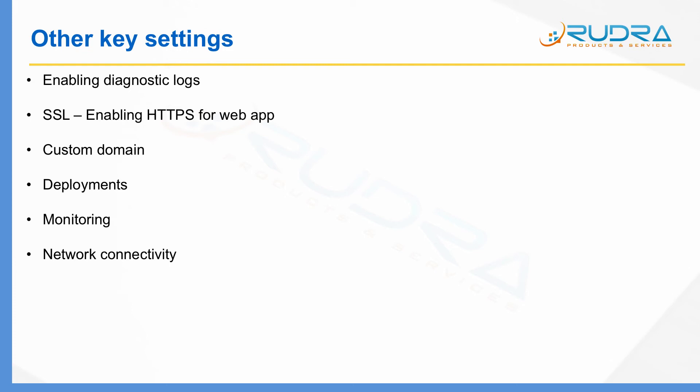So these are all the key configuration settings associated with app service. In this lecture, I have taken you through key application settings and also other key settings associated with your app service in order to monitor, secure, deploy, and establish network connectivity. In the next lab, I'm going to show you where to configure all these application settings using the Azure portal, and we are going to test app settings — I'm going to input a key-value pair within Azure portal and verify that you can access the key value from the app.